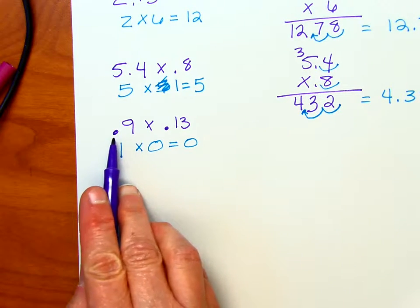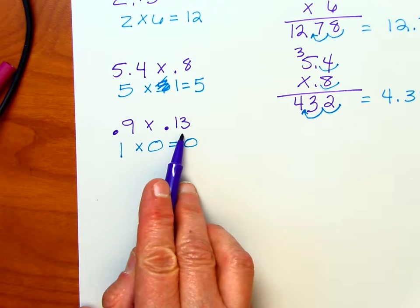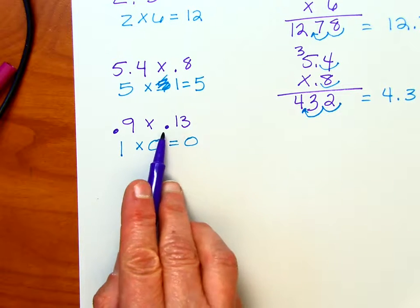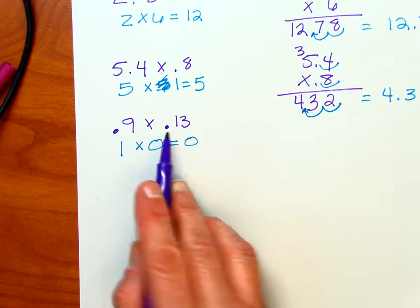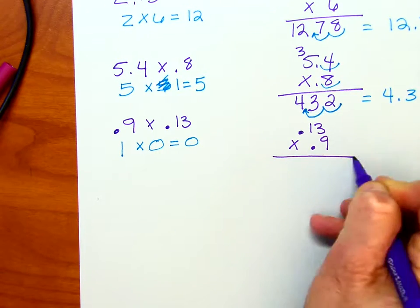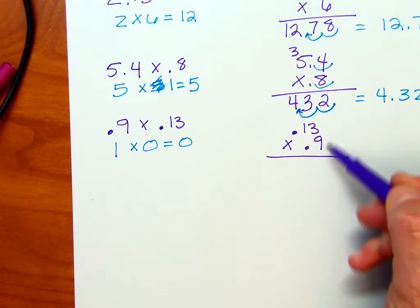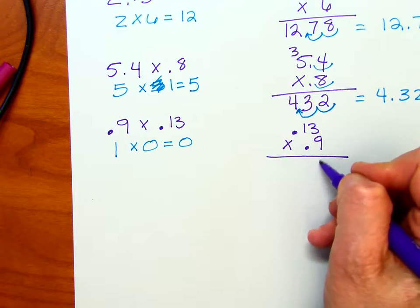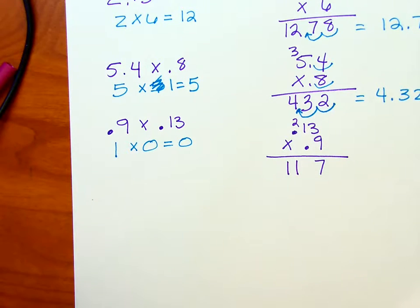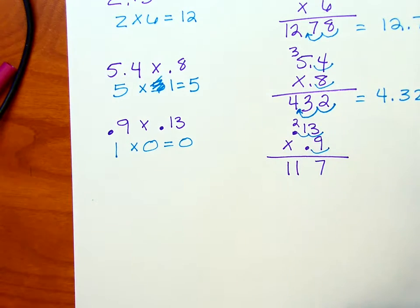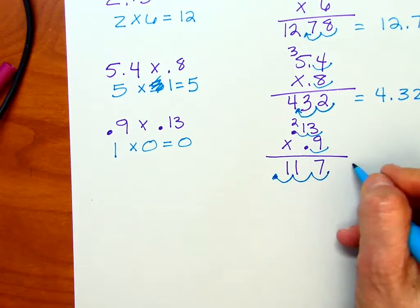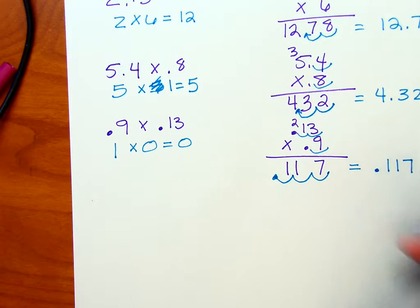Alright, let's go ahead and figure this out. Now notice the first factor has only one digit, and the second factor has 2. With multiplication, order does not matter. That's the commutative property. So you can reverse the order in which you write down your numbers. I'm going to write down the 0.13 first, and then multiply that by the 0.9. We should come up with the same answer regardless of how you set it up. 3 times 9 is 27. 9 times 1 is 9 plus 2 is 11. Notice I have 2 decimal places on top and 1 on the bottom. 2 plus 1 is 3. So I'm going to move my decimal point over 3 places. And my answer is going to be 0.117.